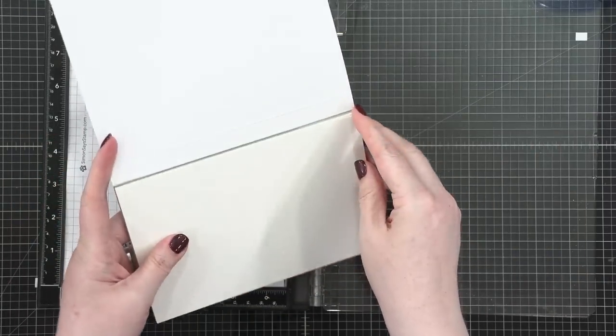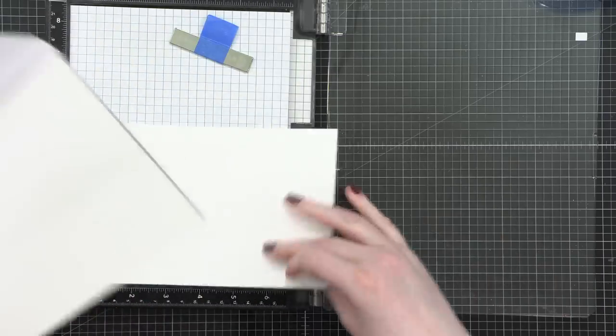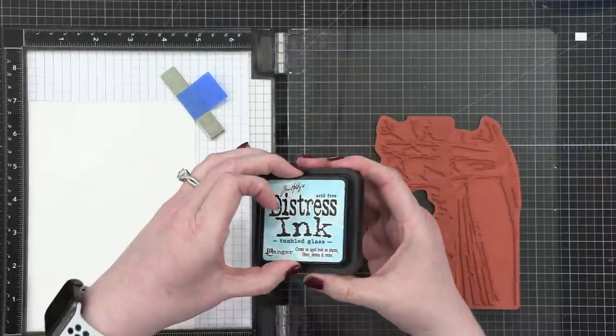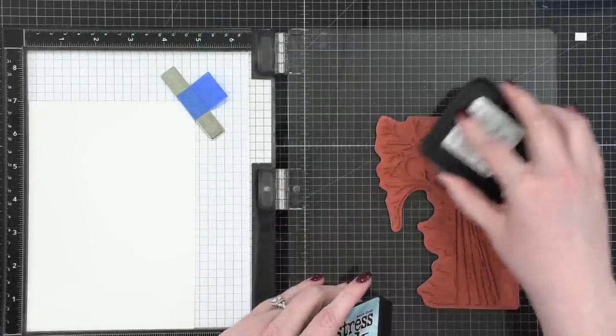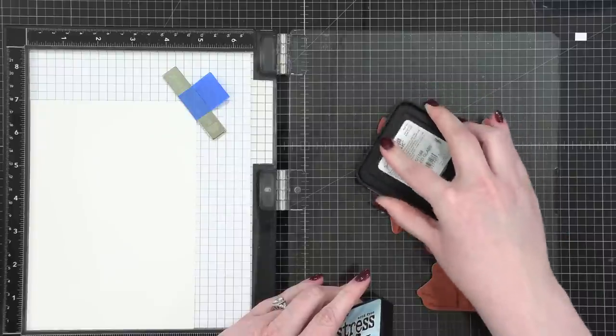And I thought it'd be fun to do almost like a no-line watercoloring type of idea with this, where I will stamp the image in a lighter ink, in this case it's tumbled glass, onto some watercolor paper and then I'm going to paint right over the top.